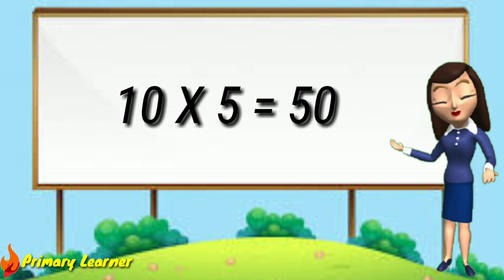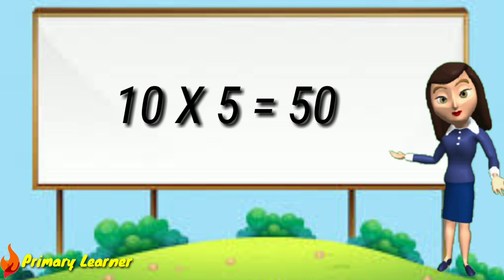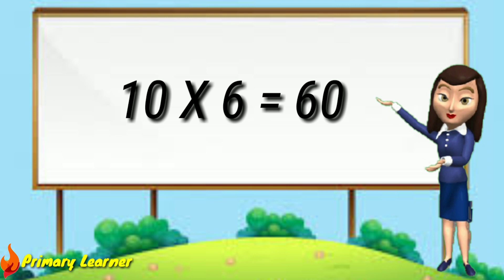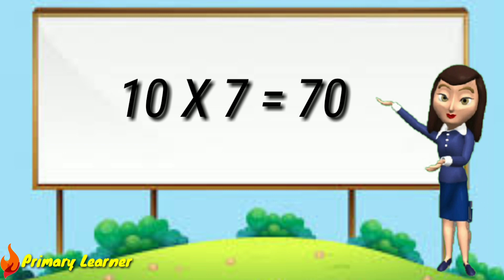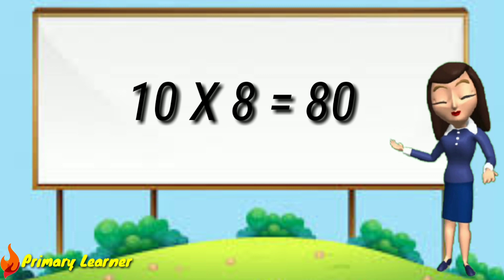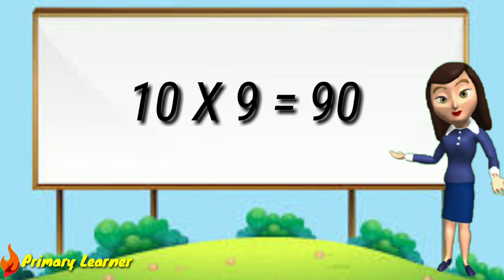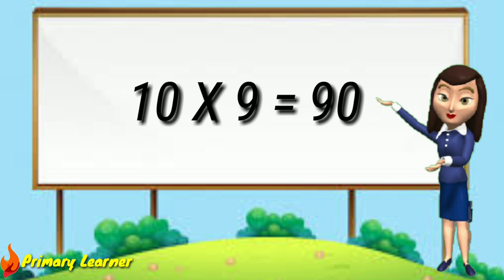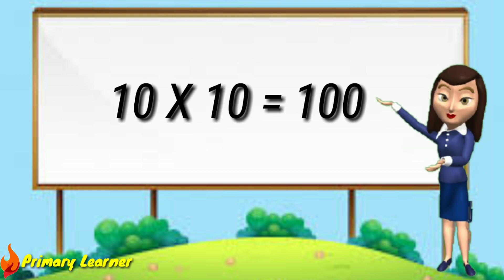Table of 10. 10 ones are 10. 10 twos are 20. 10 threes are 30. 10 fours are 40. 10 fives are 50. 10 sixes are 60. 10 sevens are 70. 10 eights are 80. 10 nines are 90. 10 tens are 100.